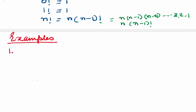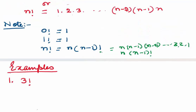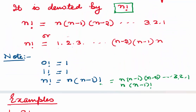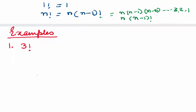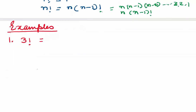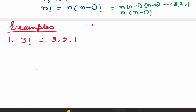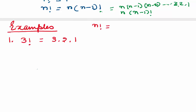Let's do some examples. What is the value of 3!? Using the formula, n! = n × (n−1) × … × 1, so 3! = 3 × 2 × 1 = 6.